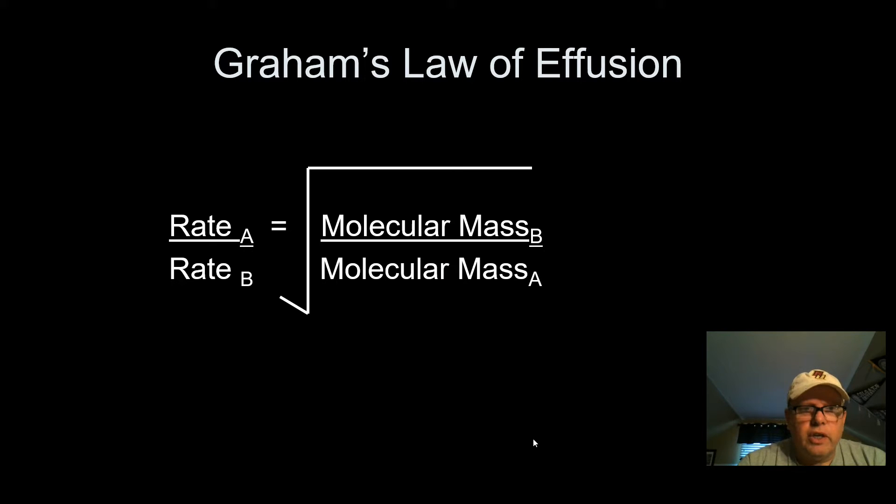Graham's law of effusion looks like this. The rate of gas A over the rate of gas B is equal to the square root of the molecular mass of gas B over the molecular mass of gas A. So things to note there, we're talking about rates, which will usually be in the units of meters per second, and we're talking about molecular mass, which is grams per mole. Notice, please, here, that this is B down here and B up there, so they are opposite or reciprocal like that. And I'll show you how to use this law. It is a bit different, and it's related to that whole kinetic energy is equal to one-half mV squared.